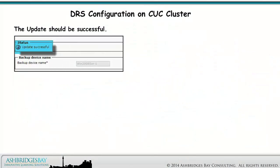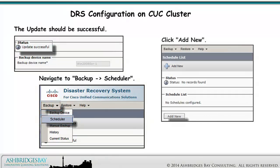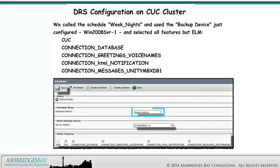The update should be successful. Navigate to Backup > Scheduler. Click Add New. We called the schedule "weeknights" and used the backup device just configured — Windows 2008 Server 1 — and selected all features but ELM. We selected CUC, Connection Database, Connection Greetings Voice Names, Connection HTML Notification, and Connection Messages Unity MBX DB1.